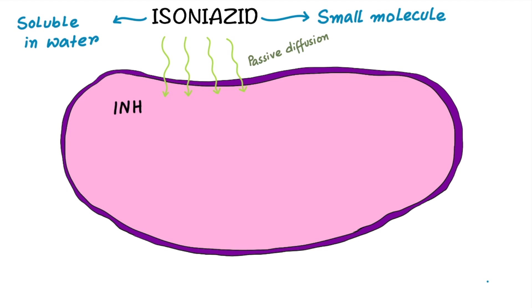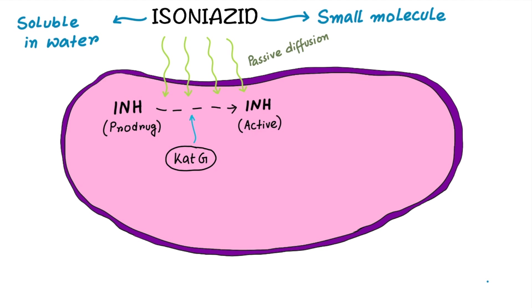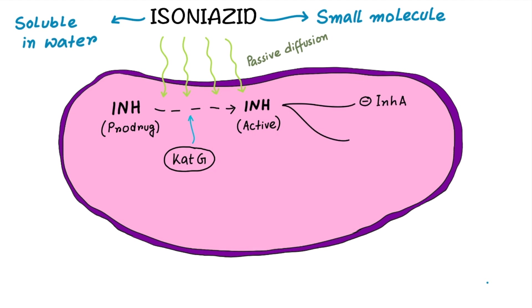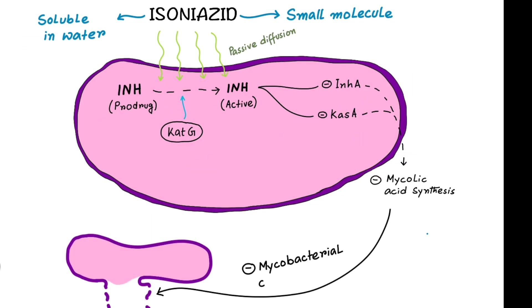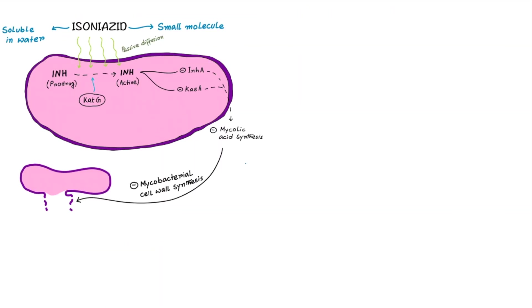Now let's discuss the mechanism of action. Isoniazid is a pro-drug. It is activated by mycobacterial catalase peroxidase, represented by katG, and the activated INH inhibits two enzymes: acyl carrier protein reductase, represented by InhA, and acyl carrier protein kinase, represented by KasA. These two enzymes are required for mycolic acid synthesis, which is an essential component of mycobacterial cell wall. That's how INH disrupts bacterial cell wall formation and kills the bacteria, producing a bactericidal effect.